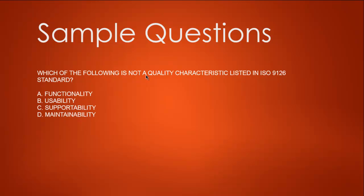Let's take the next question. Which of the following is not a quality characteristic listed in ISO 9126 standard? A. Functionality, B. Usability, C. Supportability, and D. Maintainability. The keyword here is 'not a quality characteristic' in ISO 9126 standard.